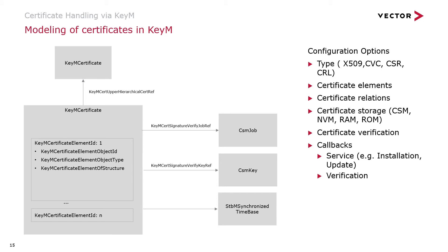Regarding the modeling of certificates in keyM, there are some important aspects that you can configure. For example, the type of certificate such as X.509 or CVC. You can model the certificate elements in which you are interested — the certificate elements make up the certificate. Besides that, you can model the relations between certificates so that you are later able to verify a complete certificate chain.